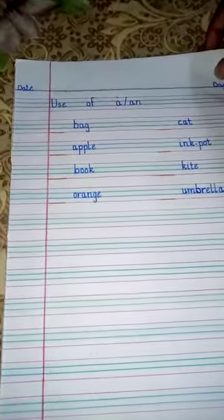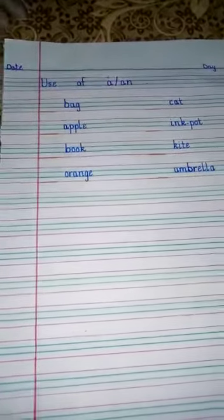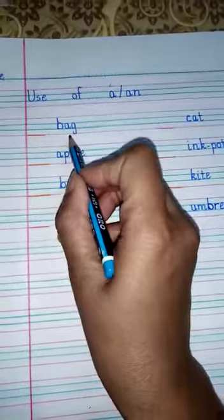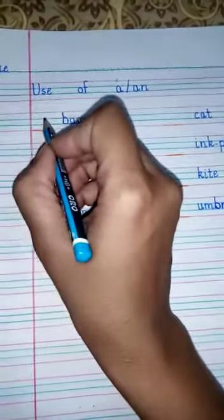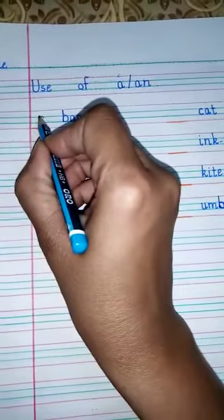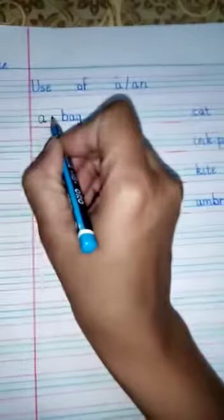Now hold your pencil in your hand and fill the blanks with me, like this. First word is bag, so what will we use? 'A'. You will write 'a'. You should write on lines.